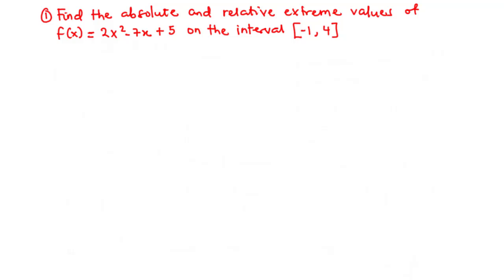We are going to learn how to find the absolute and relative maximum and minimum values of a function. Let's begin with this example: find the absolute and relative extreme values of the function f(x) = 2x² - 7x + 5 on the interval [-1, 4].